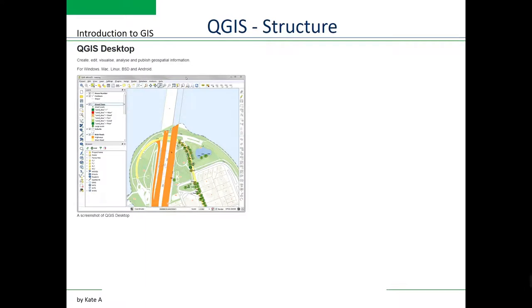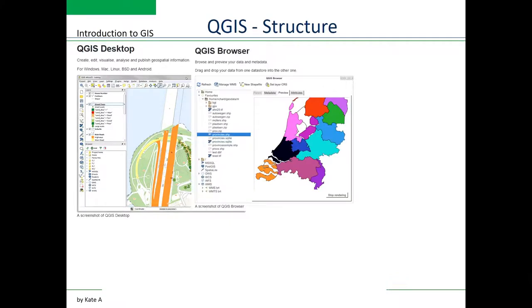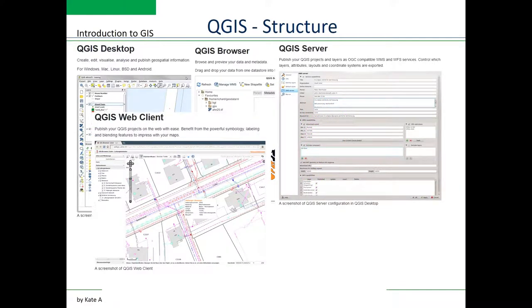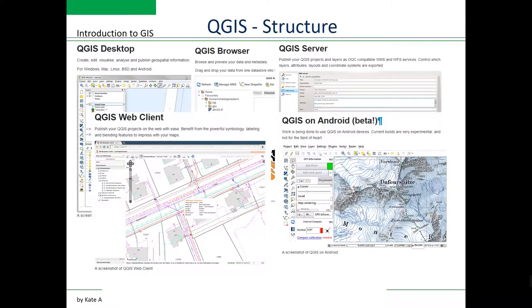The structural features of QGIS include QGIS Desktop, which lets you create, edit, visualize, analyze, and publish spatial information — available for major operating systems. It also includes QGIS Browser, QGIS Server, QGIS Web Client, and QGIS Android, so you can even run QGIS on your smartphone.